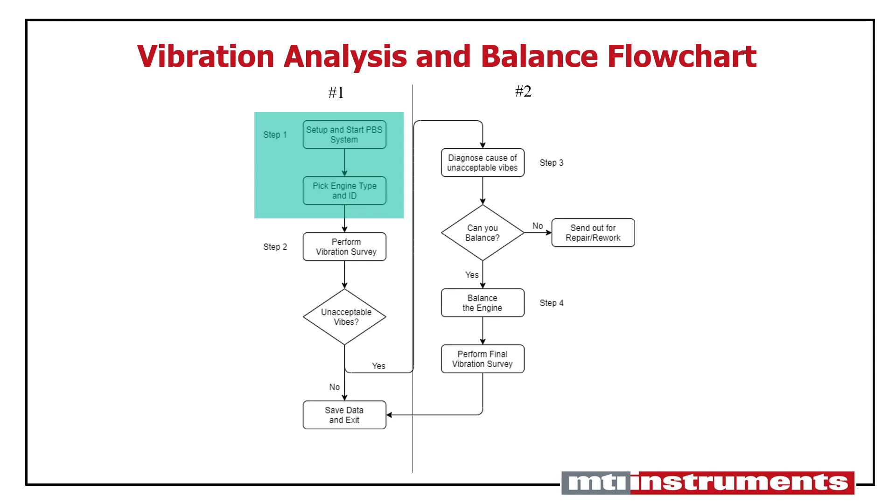Next, you'll tell the PBS software what type of engine you're working on as well as provide the engine's unique identification number. Users typically use the engine's serial number for this ID. Once we have the unit set up, running, and the engine's identification information into the system, we're ready to move to step two: completing a vibration survey. This will provide the baseline reading for the engine that we can use to make decisions about how to proceed.